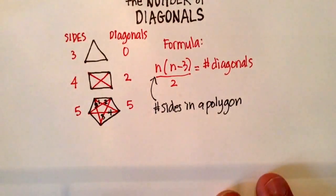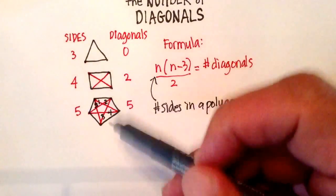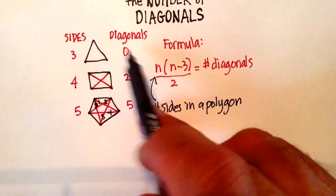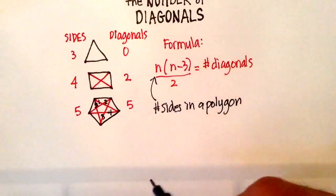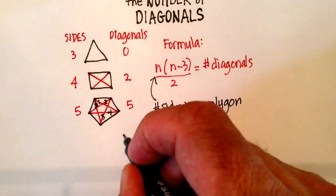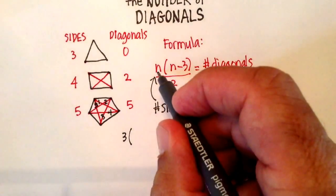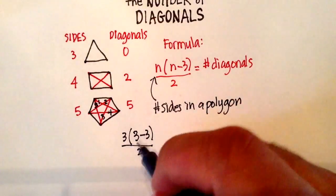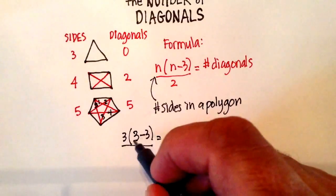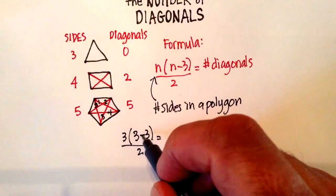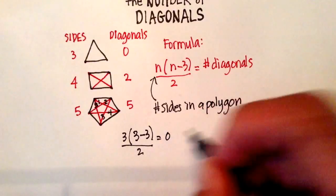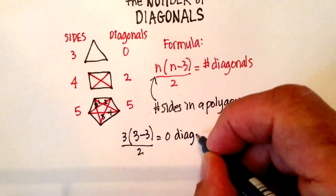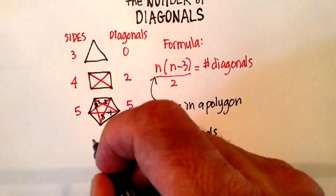Let's see if this formula works for the three that we established, and then we'll try it for a different one. So let's go with our triangle. According to our triangle, we know that there should be zero diagonals. Let's see if it works in this formula. We know that three is the number of sides, so I put that there, times 3 minus 3 over 2. Remember your algebra. 3 minus 3 is zero, so I start with the parentheses. 3 times zero is zero, and zero divided by 2 is zero. So I get zero diagonals with a triangle. And so the pattern works there with triangles.